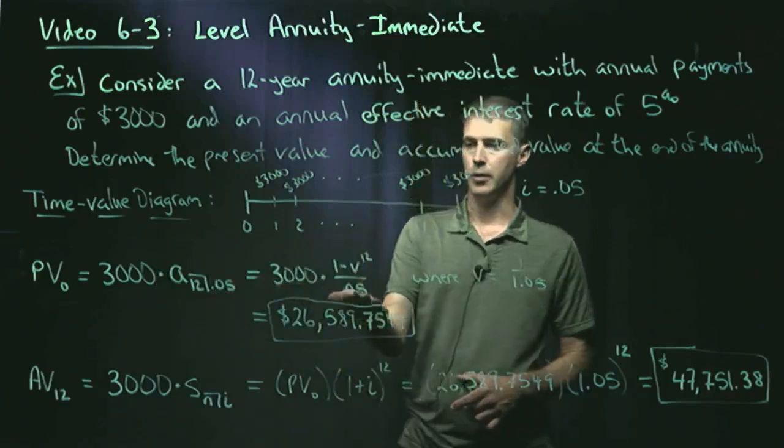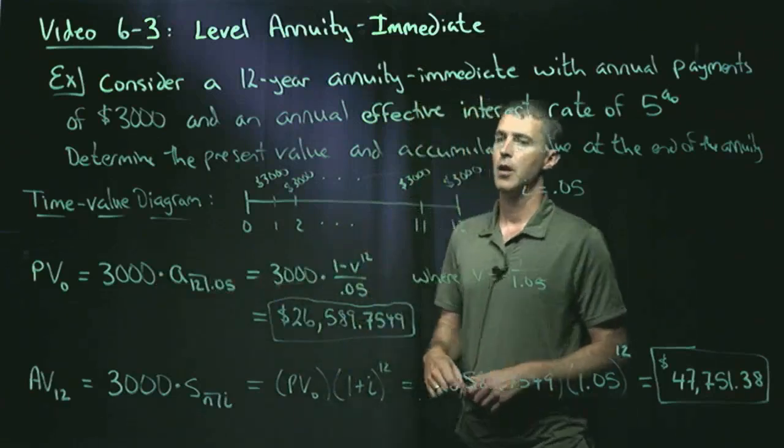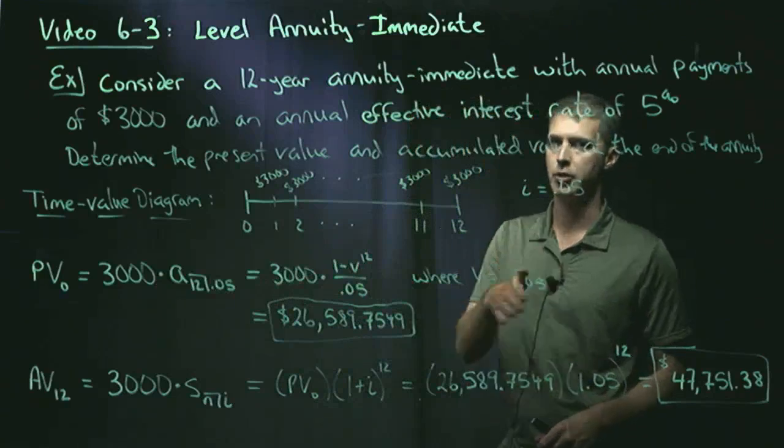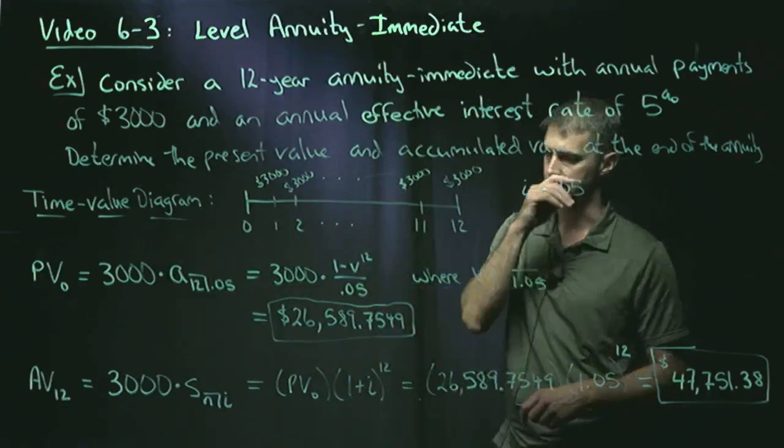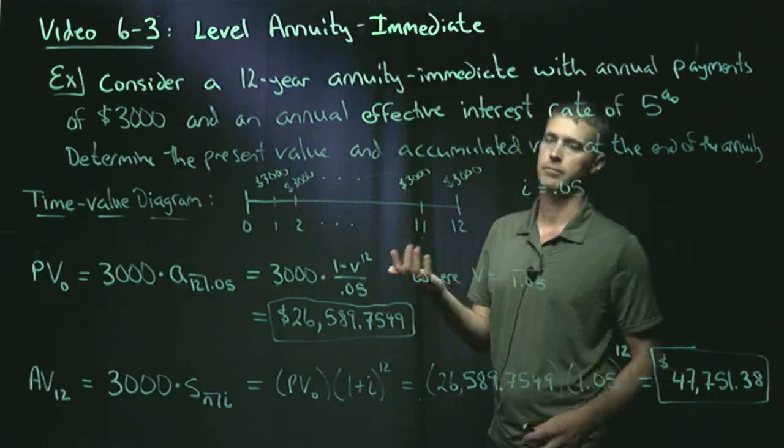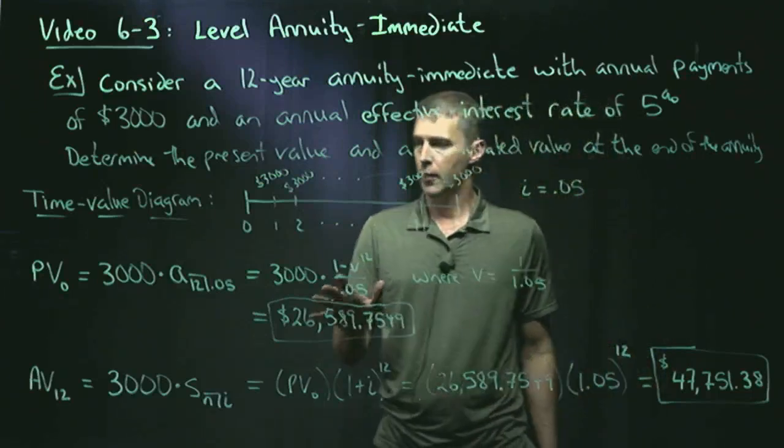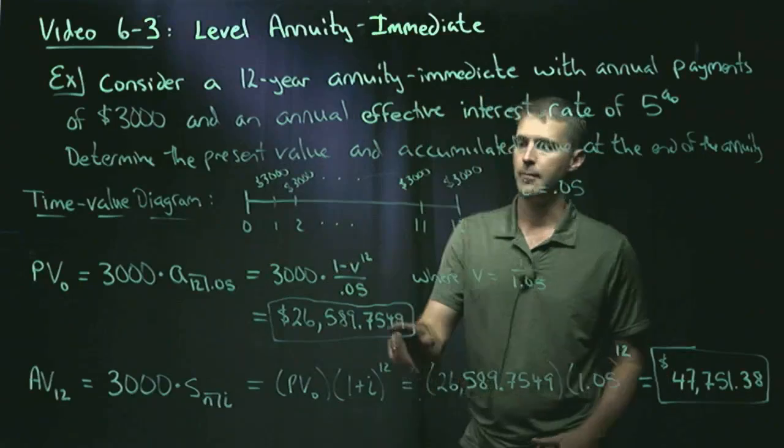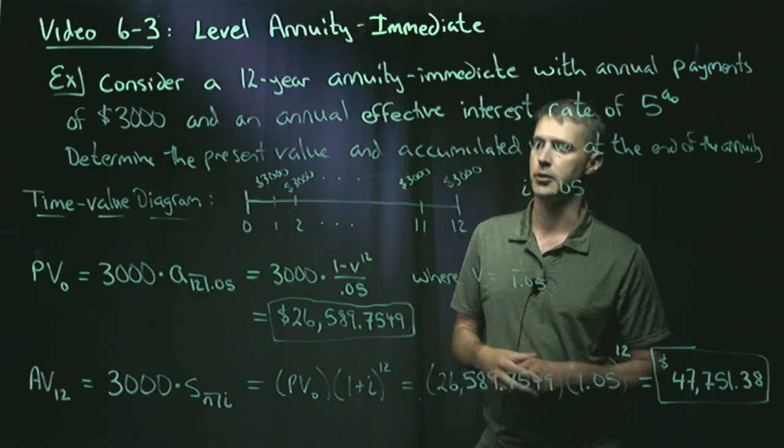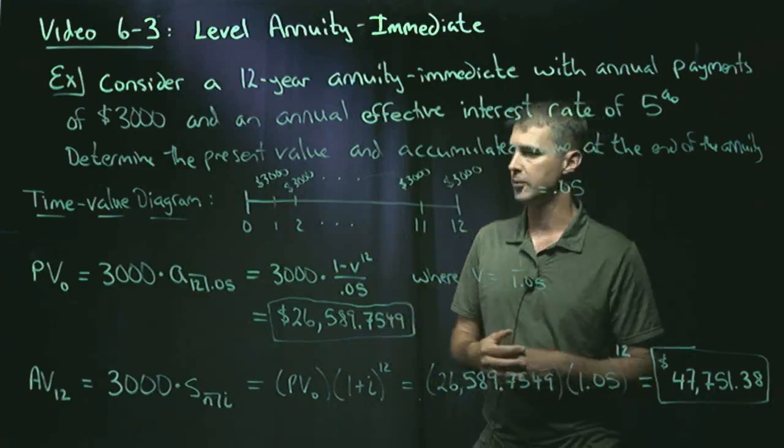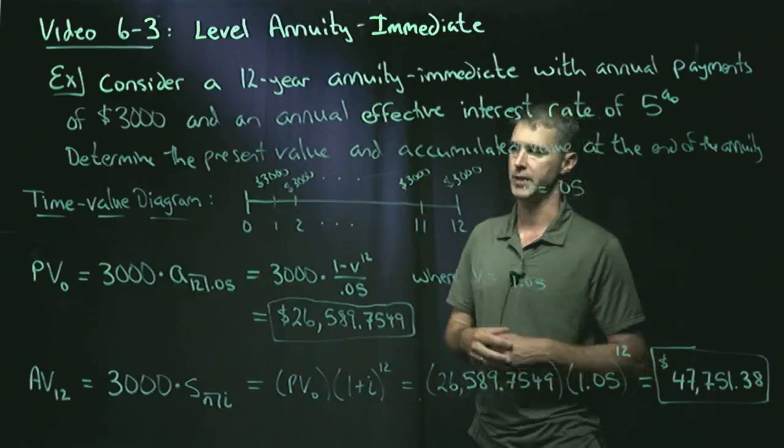We have a formula for it, where V is 1 over 1.05. It's the drag back factor. And if you punch that into your calculator, you get $26,589.7549. For those of you taking exam FM, I would always carry four decimals or more in your computations and then round to the nearest penny when you're going for your answer,